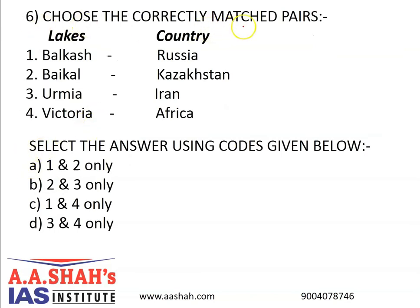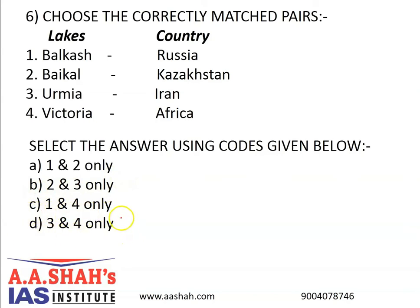Question 6. Choose the correctly matched pairs — lakes with the country. 1: Balkash — Russia. 2: Baikal — Kazakhstan. 3: Urmia — Iran. 4: Victoria — Africa. Select the answer using the codes given below. A: 1 and 2 only. B: 2 and 3 only. C: 1 and 4 only. D: 3 and 4 only.